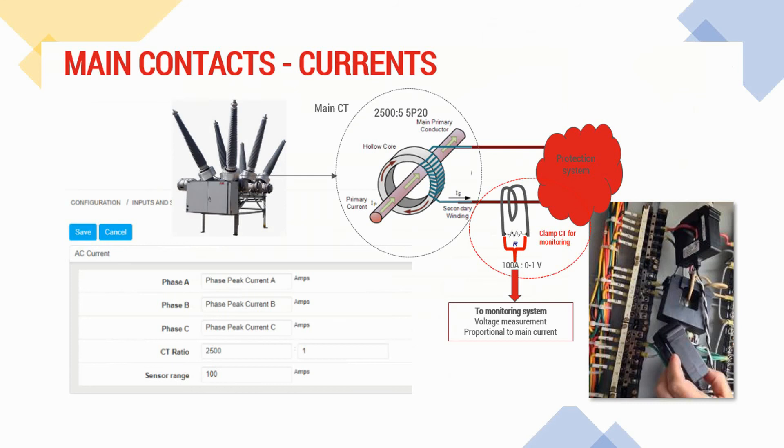One very important thing to keep in mind is that the phase current CTs are installed on the protection core of the primary CT. Let's take a look at an example.